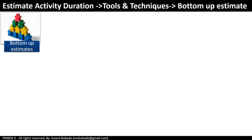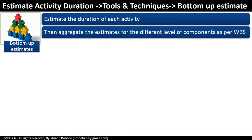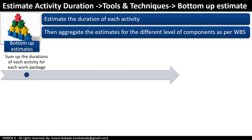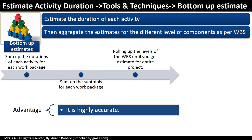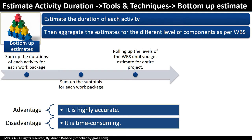Bottom-up estimation: in this technique, you estimate the duration of each individual activity and then aggregate the estimates up through the levels of the work breakdown structure. The steps are: sum the duration of each activity for each work package, then sum the subtotals for each work package, and roll up these WBS levels until you get the estimate for the entire project. The advantage is it is highly accurate. The disadvantage is it is time-consuming because you are estimating individual activities and rolling them up. It is the exact opposite of the top-down techniques — analogous and parametric estimation.